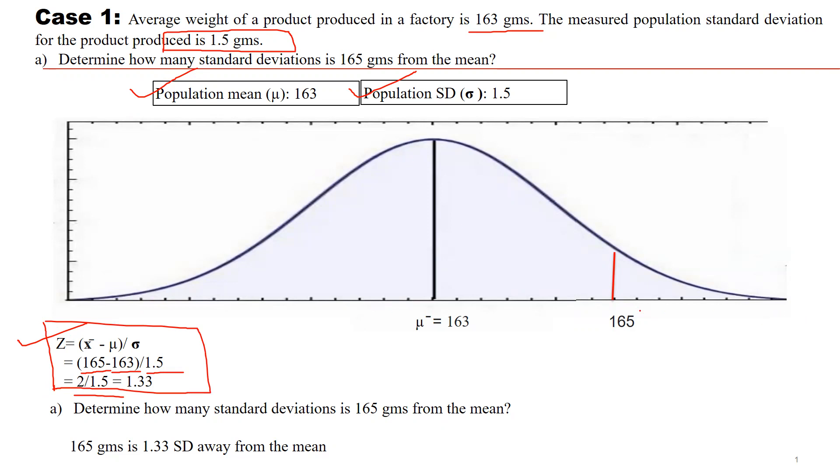This is the normal distribution curve. Here is μ at 163 and 165. So, 165 grams is 1.33 standard deviations away from the mean.